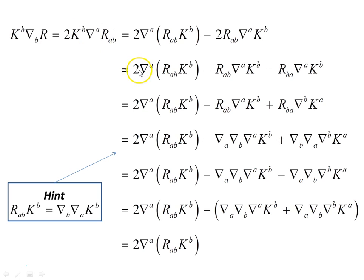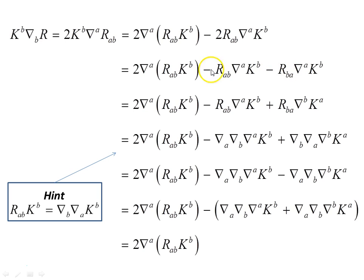Next line down, we separate the two terms. The Ricci tensor R_ab is symmetric in its two indices a, b — so R_ab equals R_ba — and there is no sign change because they are symmetric, so we can change those without any sign change.